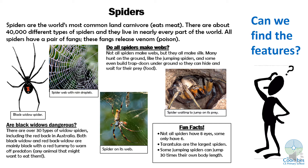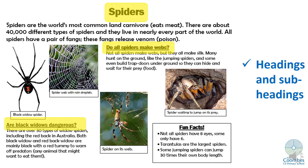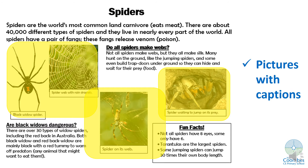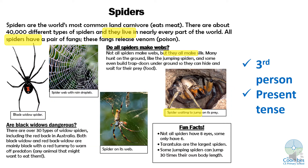I wonder if you've already managed to spot some of the features on our list. Let's have a look in detail. First of all, we have headings and subheadings made really clear for us — they're bold, underlined, and they stand out so we know what information is in the text. There are pictures with captions, and as we said on Monday, these pictures, if they can be photographs, will be photographs. It's written in the third person — we have pronouns 'they' and nouns 'spiders'. And it's written in the present tense: live, have, waiting to jump, make are all present tense verbs.